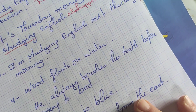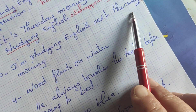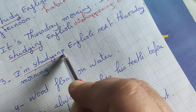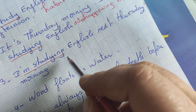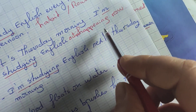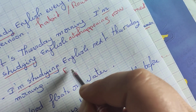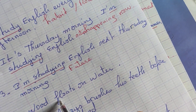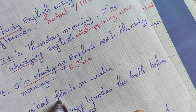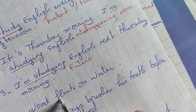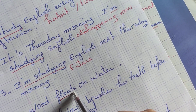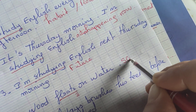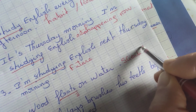Number three: 'I'm studying English next Thursday morning.' The present continuous here expresses the future. Next example: 'Wood floats on water.' 'Floods' — floats — is the present simple. What does it express? It expresses a scientific truth.